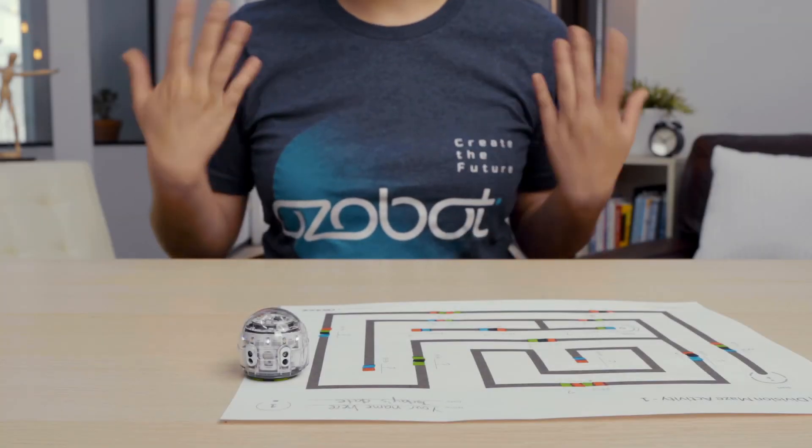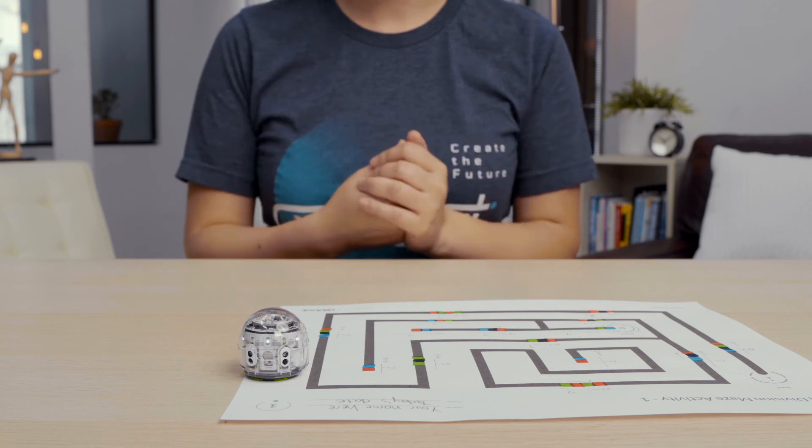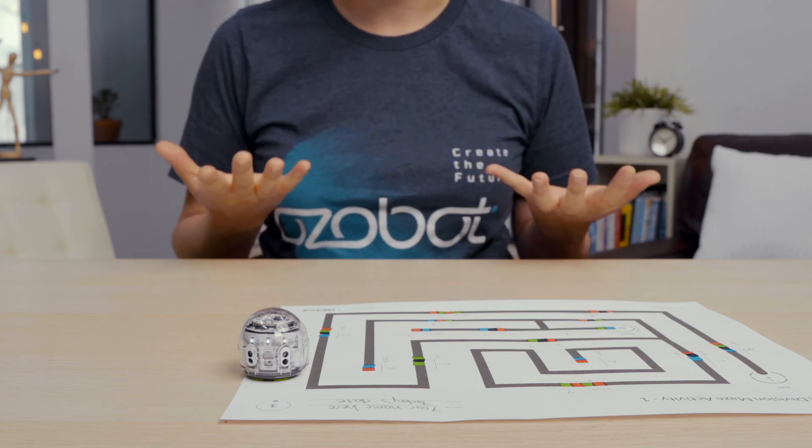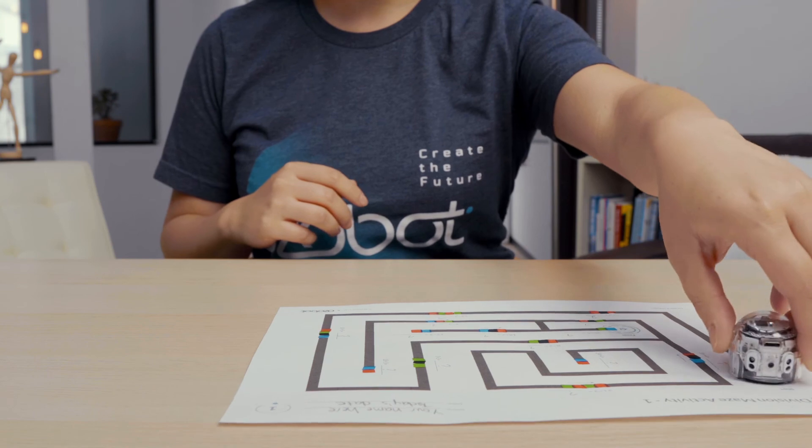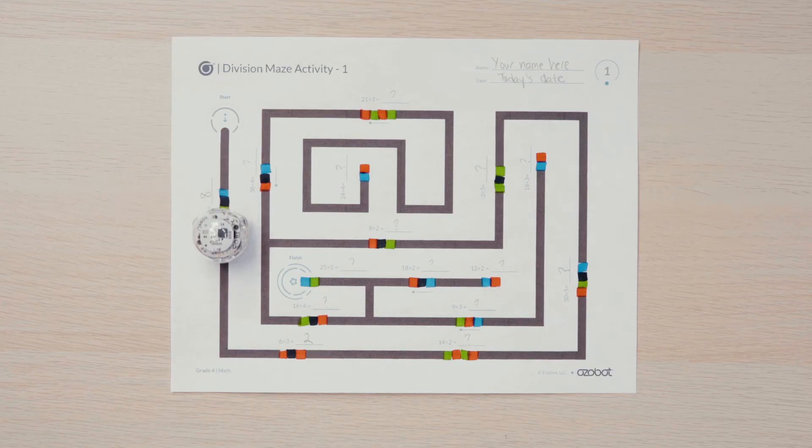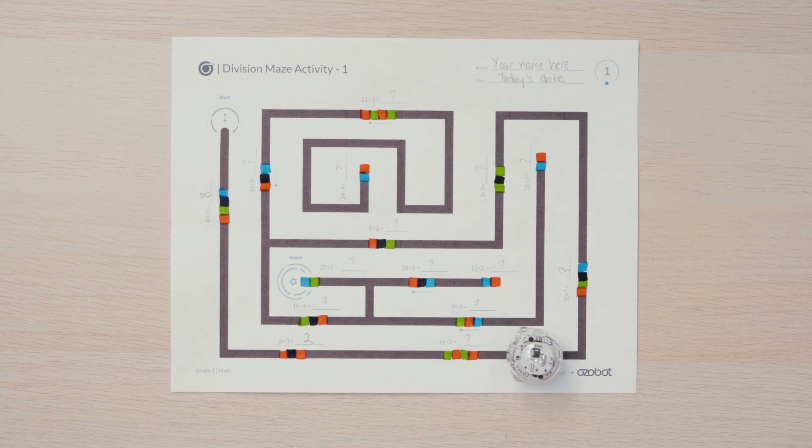Your color codes are all done and now you're ready to see if the bot can get to the victory dance at the end of the maze. Turn your bot on and place it on start. Can you identify the codes by what the Ozobot does as it passes over each code?